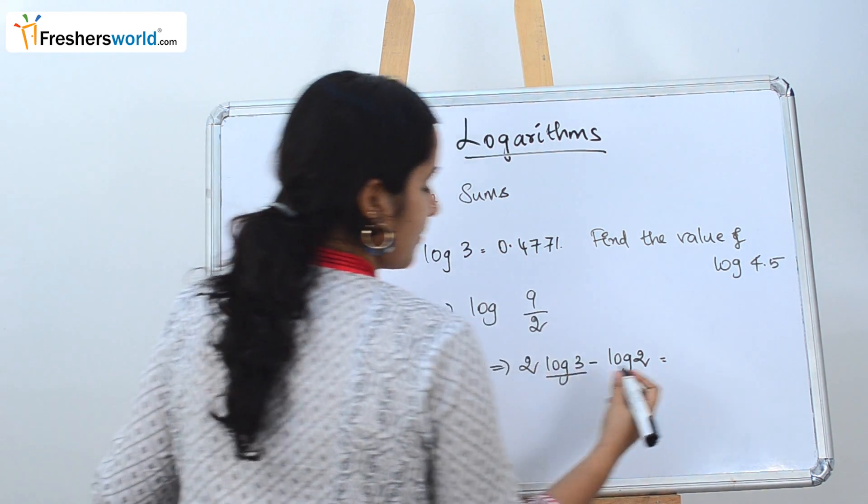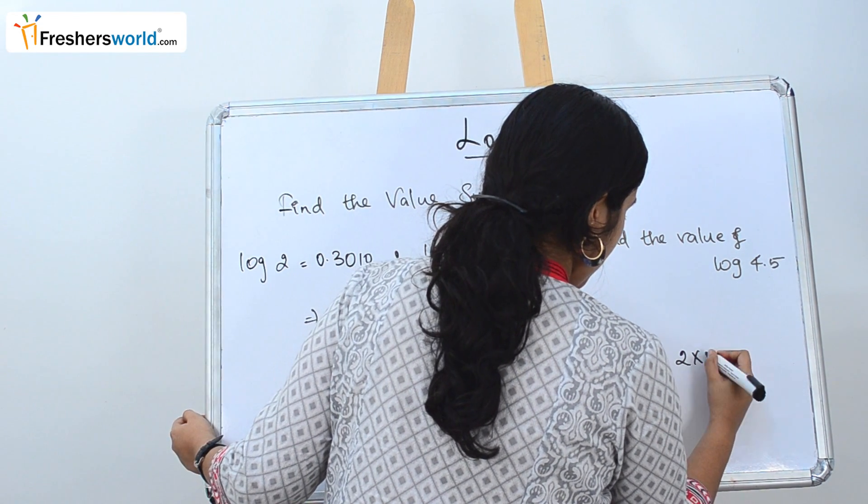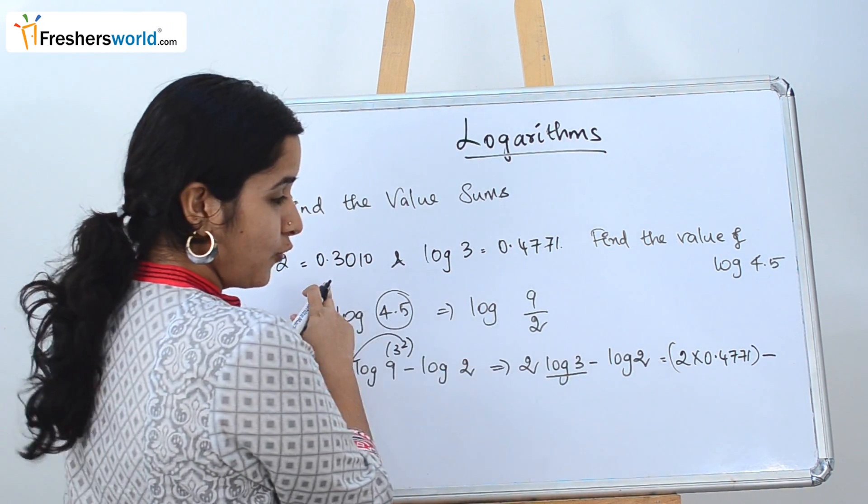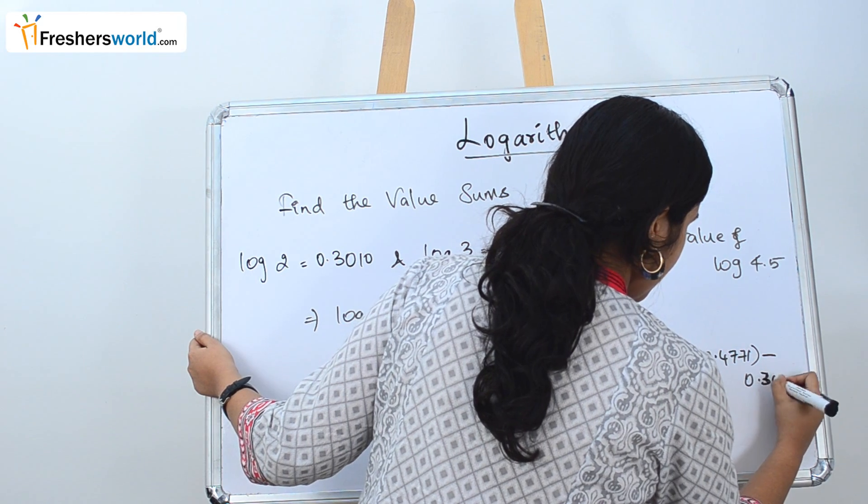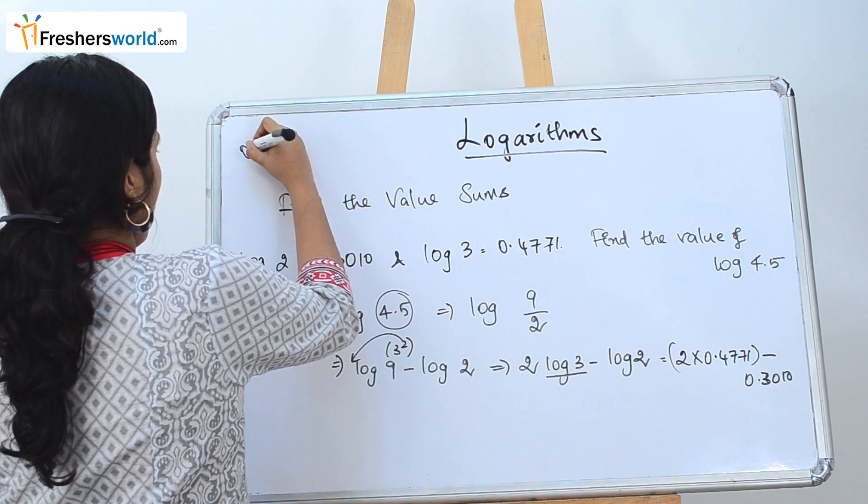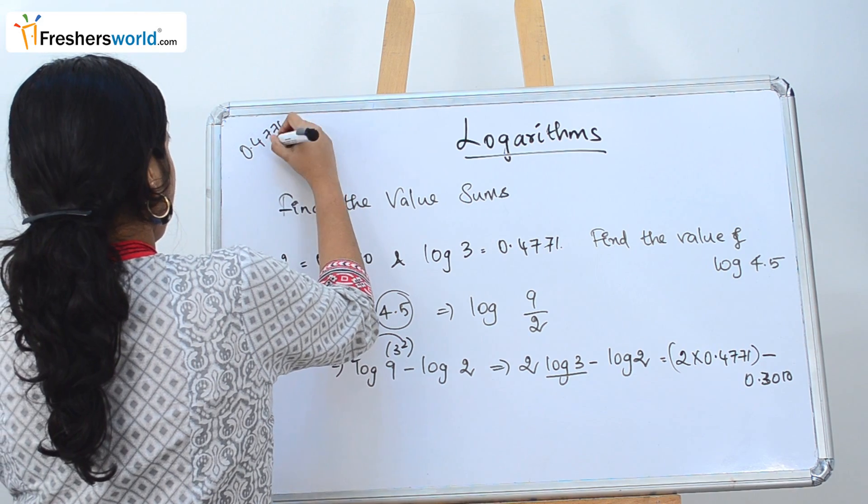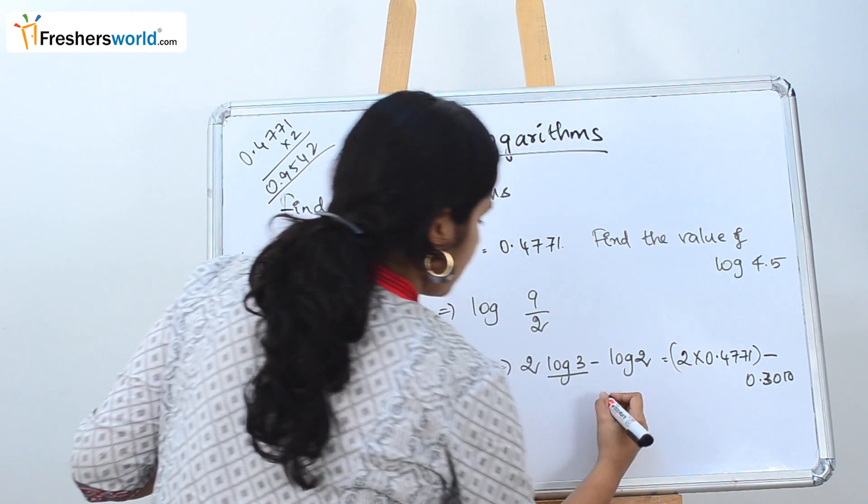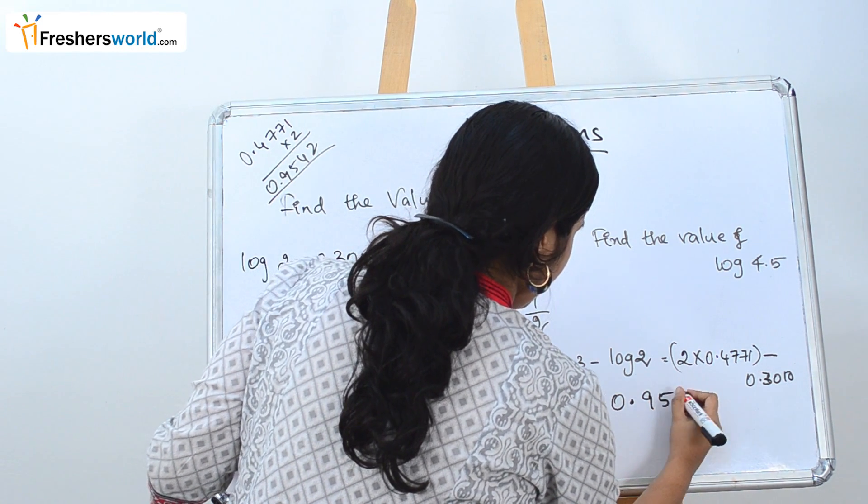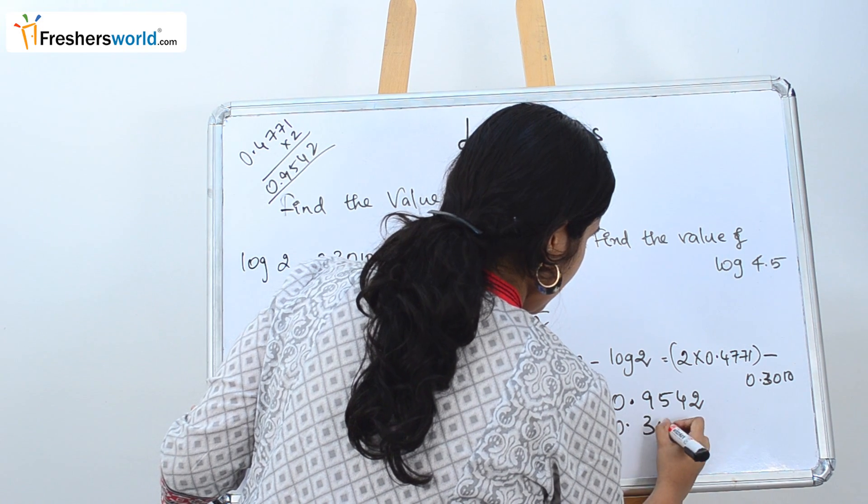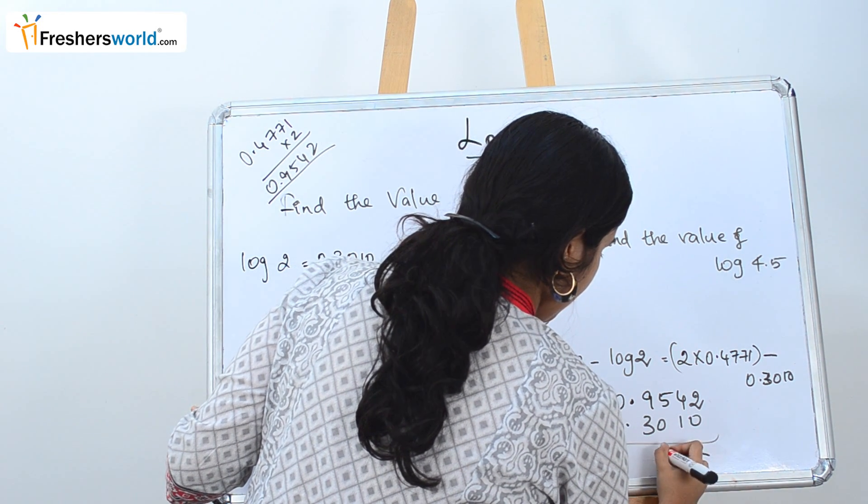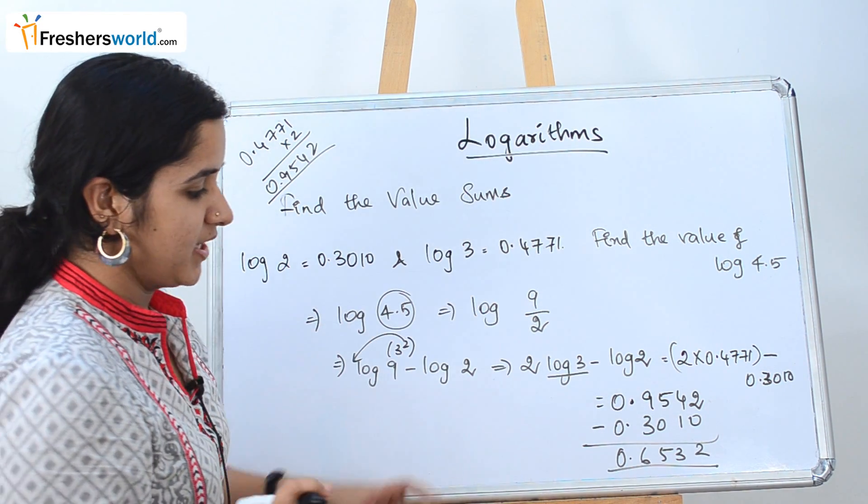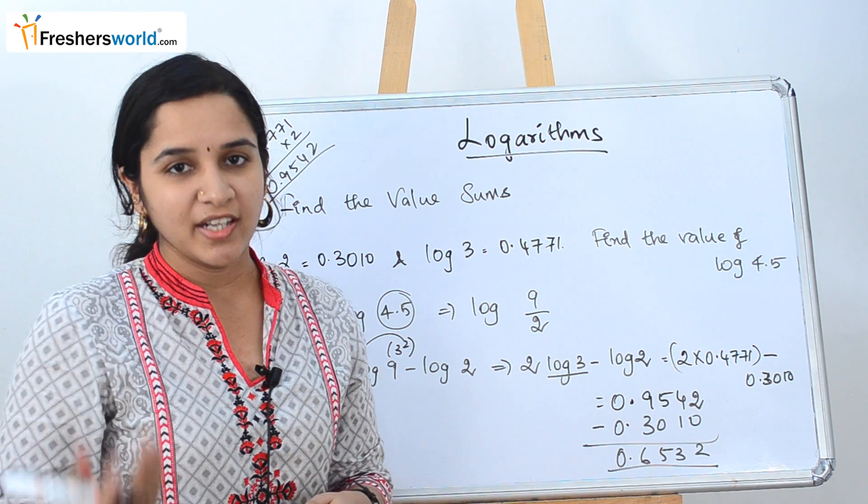Log 3 value is 0.4771. 2 into 0.4771 minus log 2, which is 0.3010. So the value of log 4.5 is nothing but 0.6532.